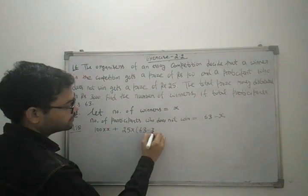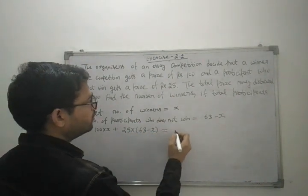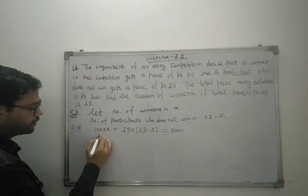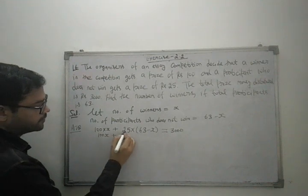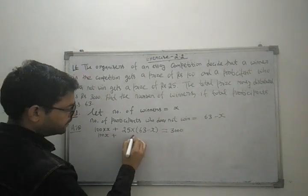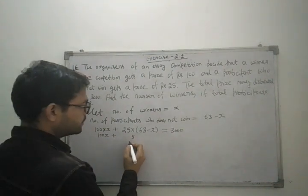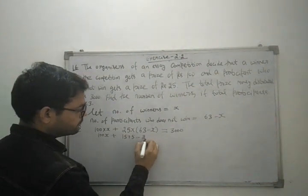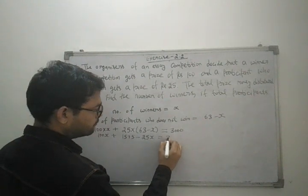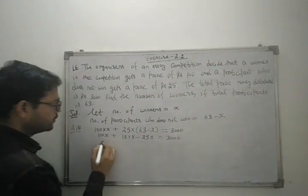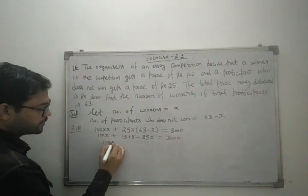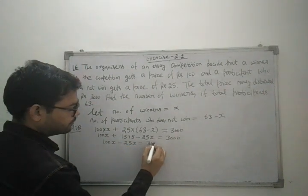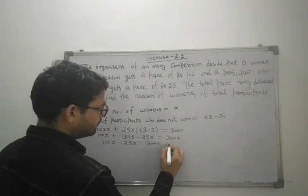That is equal to 3,000. So 100x plus 25 times (63 minus x) equals 3,000. Take x on one side and without x on the other side.